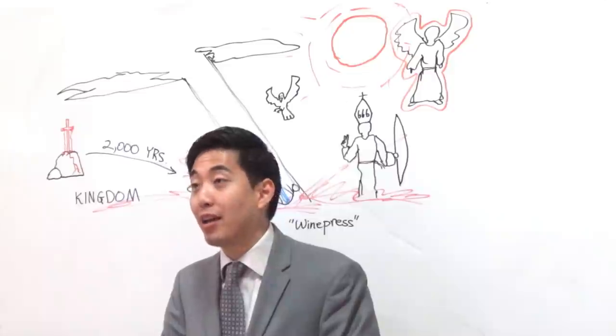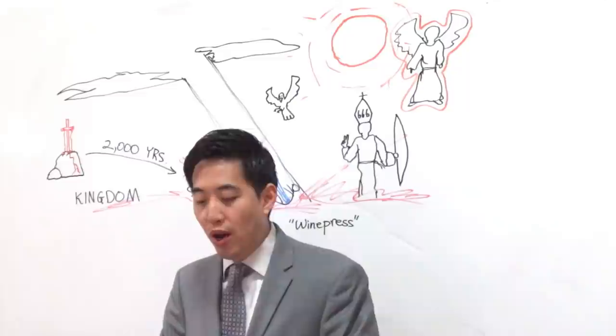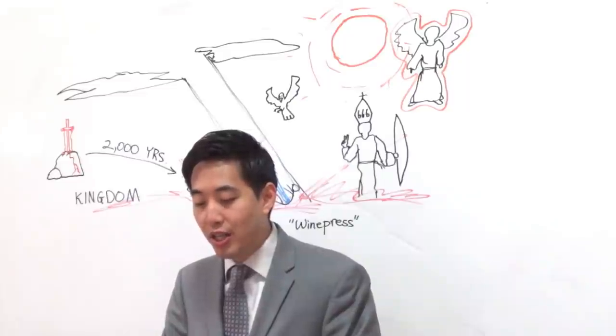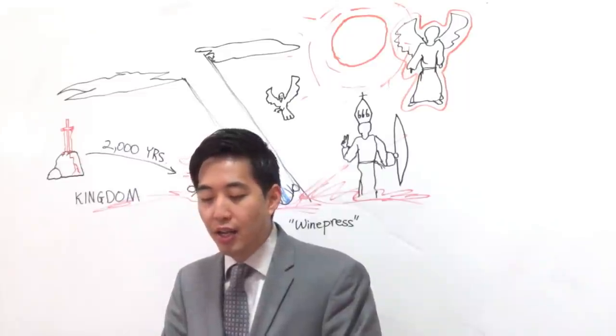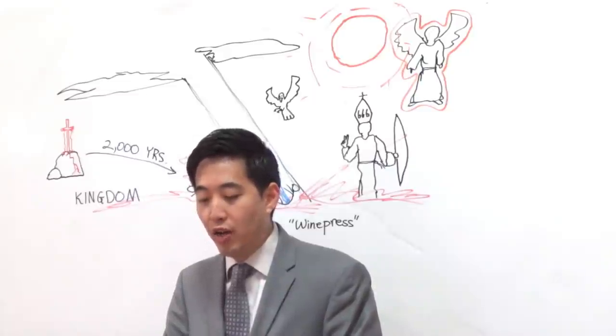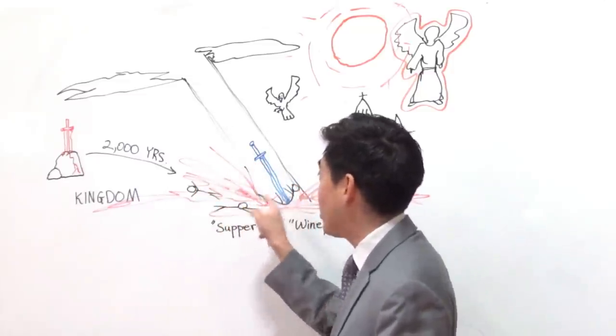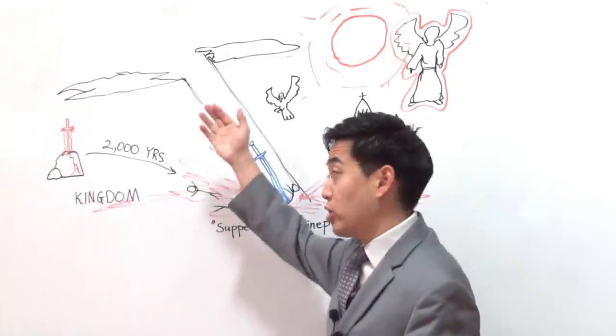Where is he coming? Look at verse 28. For wheresoever the carcass is, there will the eagles be gathered together. Notice over here that all the birds are gathered together where the carcasses are laid out.